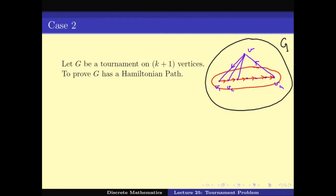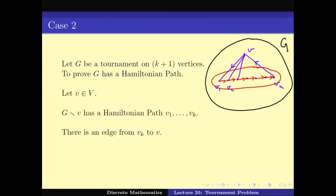In Case 2, there is an edge from Vk to V. Then the Hamiltonian path is V1, V2, V3, ..., Vk, V — we extend the original path by appending V at the end. So V1 to Vk, then V, is a Hamiltonian path in G.